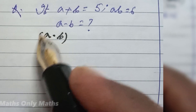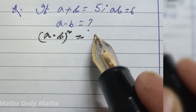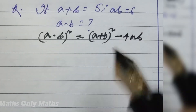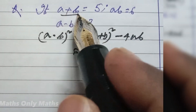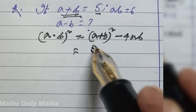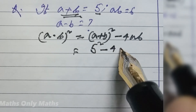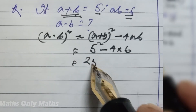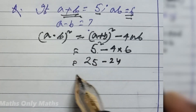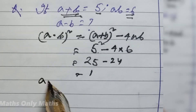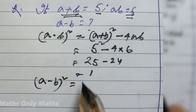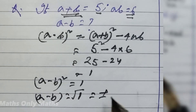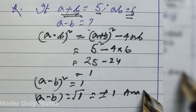a minus b whole square equals a plus b whole square minus 4ab. Now a plus b is 5, so I write 5 square minus 4 multiplied by ab, which is 6. That gives 25 minus 24, which equals 1. So a minus b whole square is 1, and a minus b equals square root of 1, which is plus or minus 1. That is the answer.